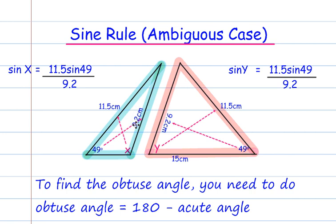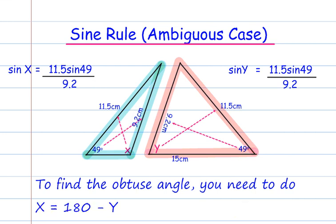To find the obtuse angle, because these are on a straight line, you'll need to do obtuse angle equals 180 take away the acute angle. So in this case, X is equal to 180 take away Y.